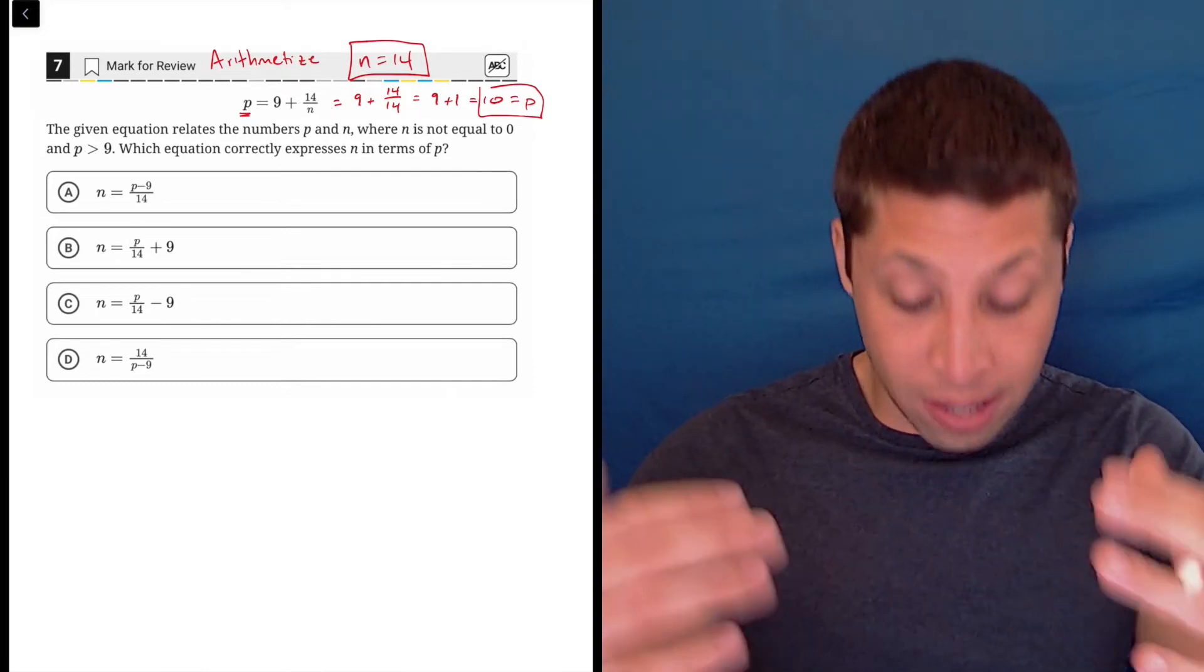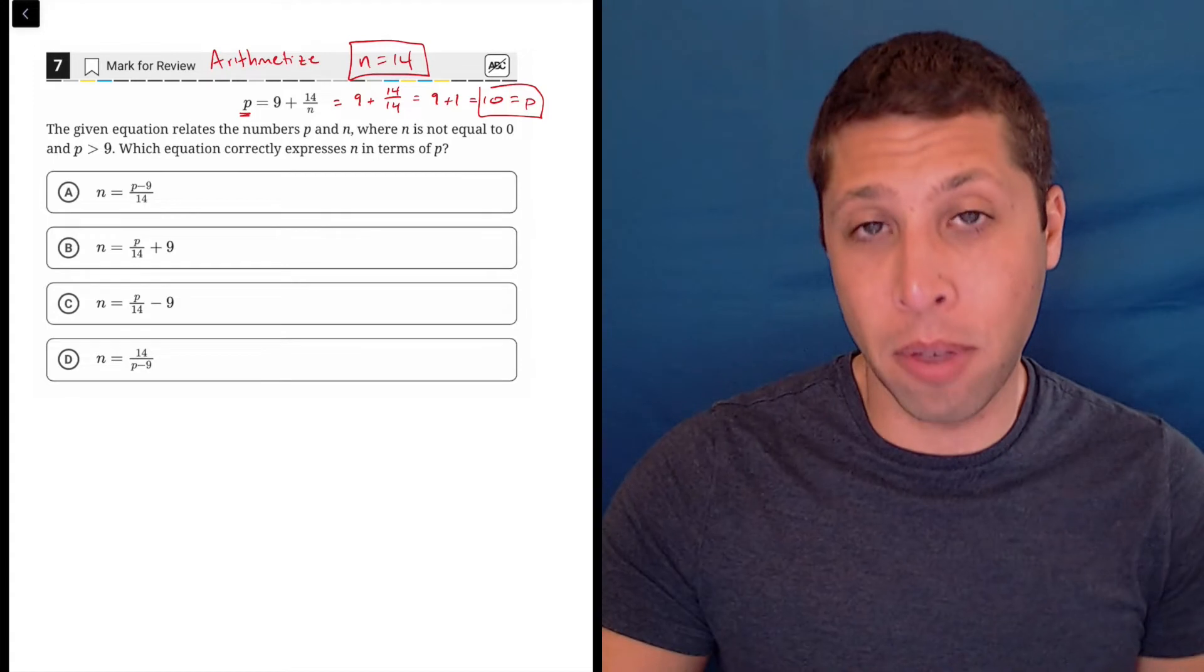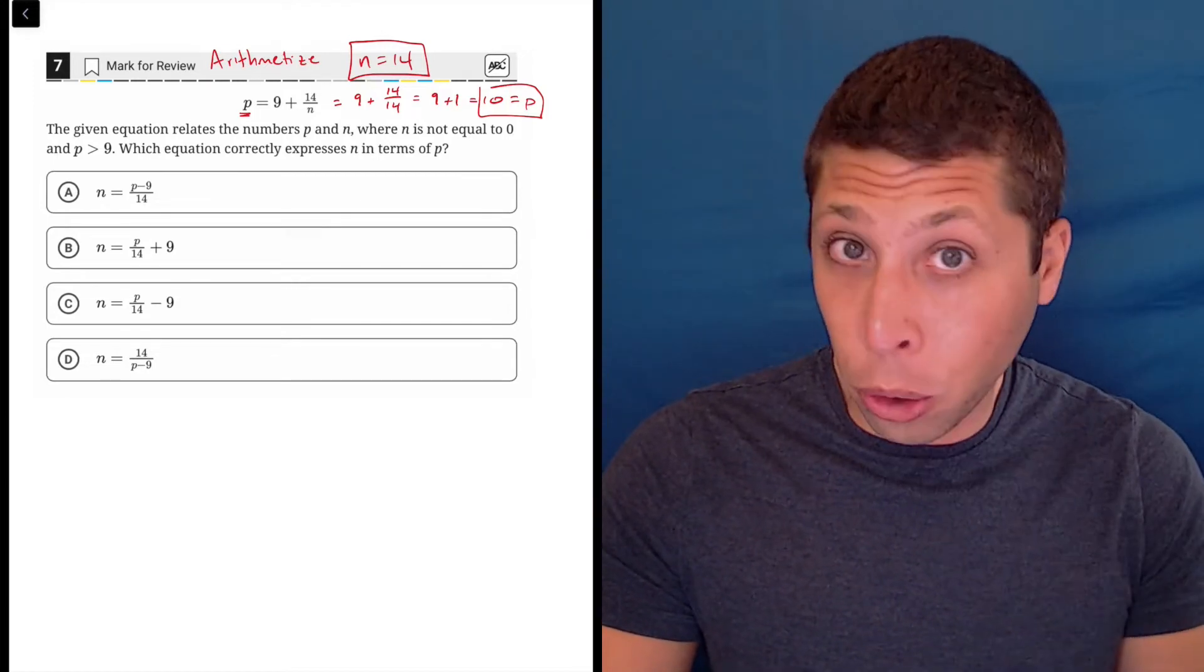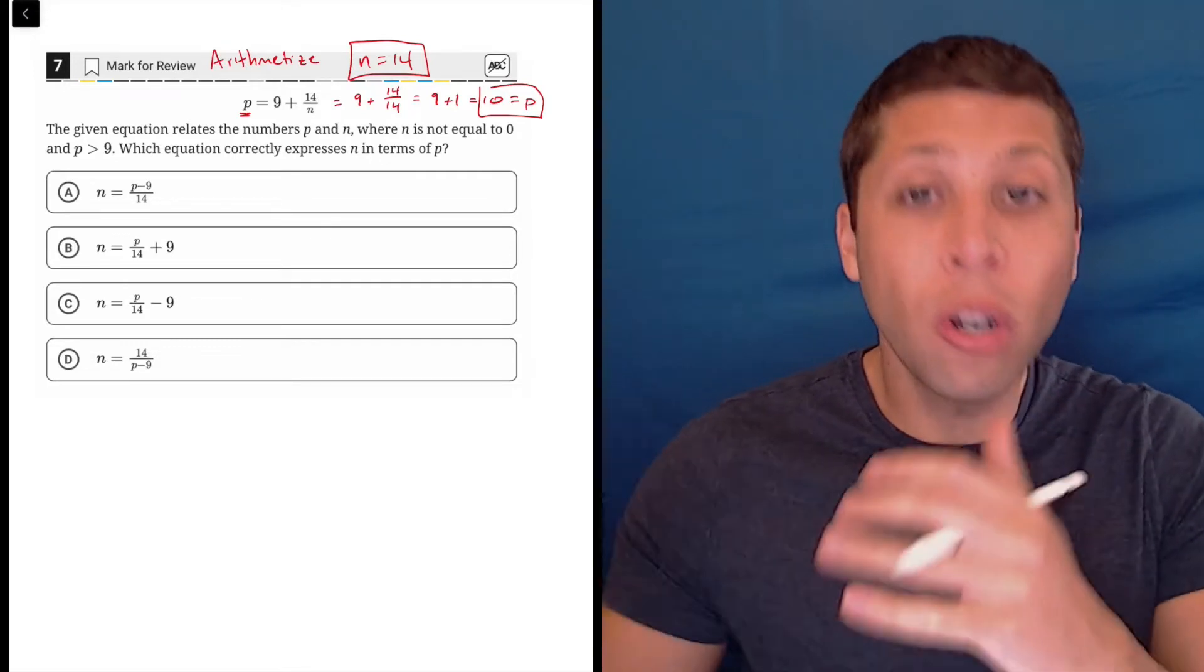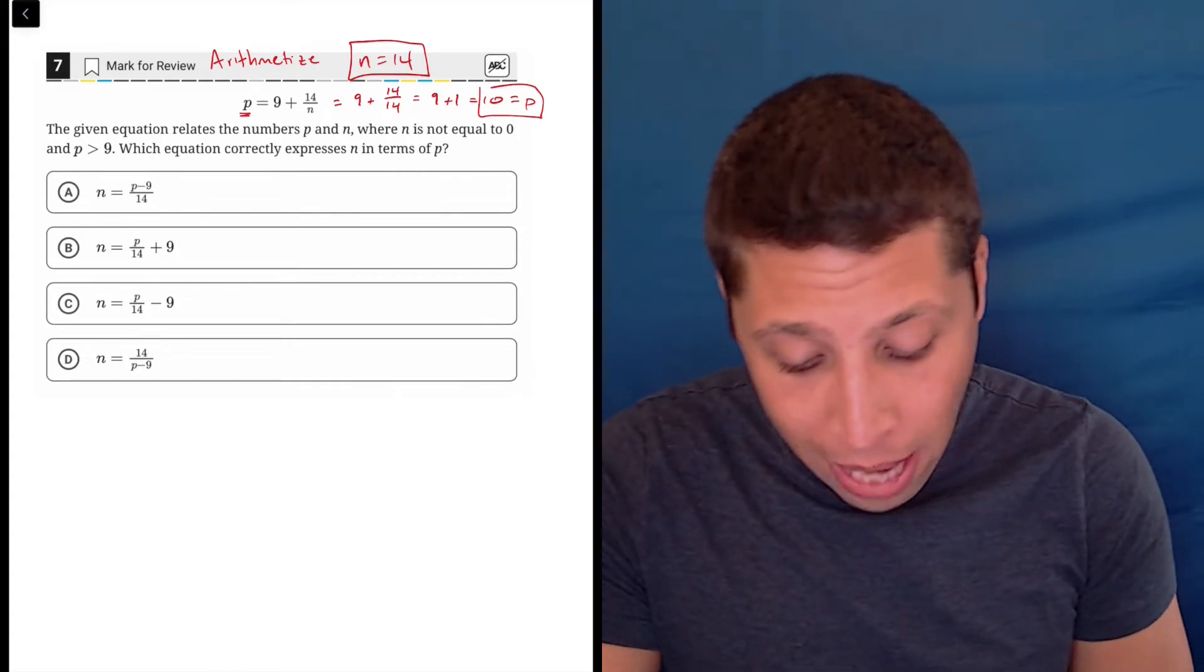So, what they're saying is these equations and the choices, one of them is supposed to be the exact same thing as what we were given to start, just rearranged. And if that were true, then the numbers that came out of that original equation should also fit into the new equation in the choices. Let's see what happens.